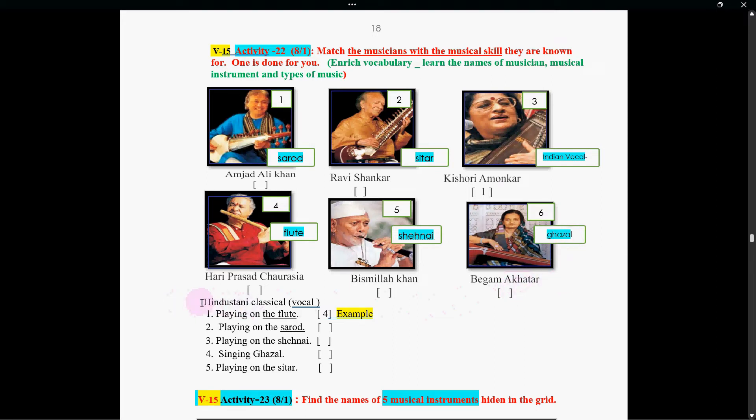So friends, one is given for you, Hindustani classical. Now, read the sentence and understand that. And here, you write the number in the brackets. Playing on the flute, that is number four. See, this is flute. Number four, that means Hari Prasad Chaurasia playing on flute. For others, you find out and write the number here. Five minutes are given.